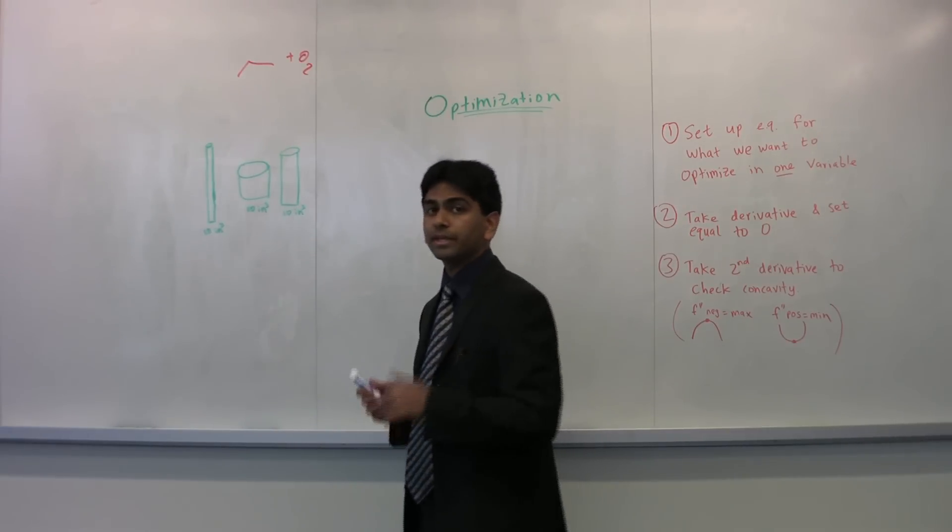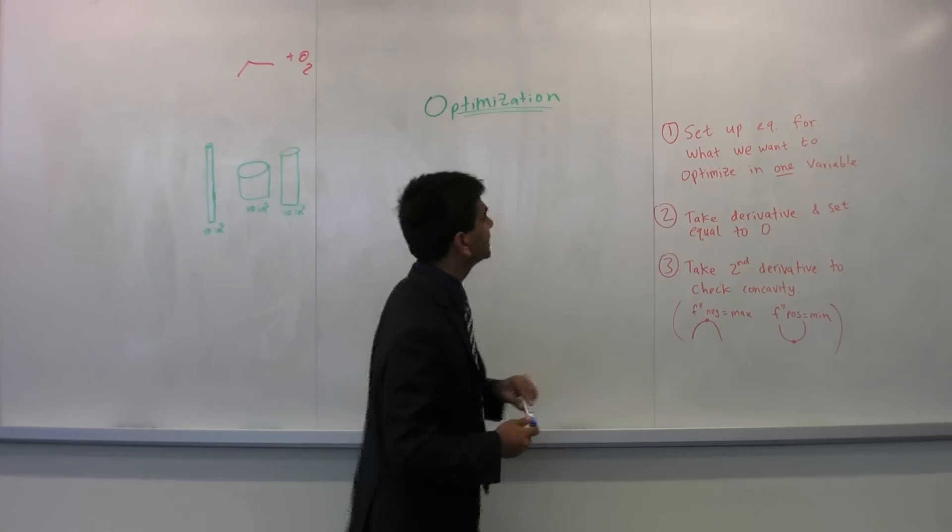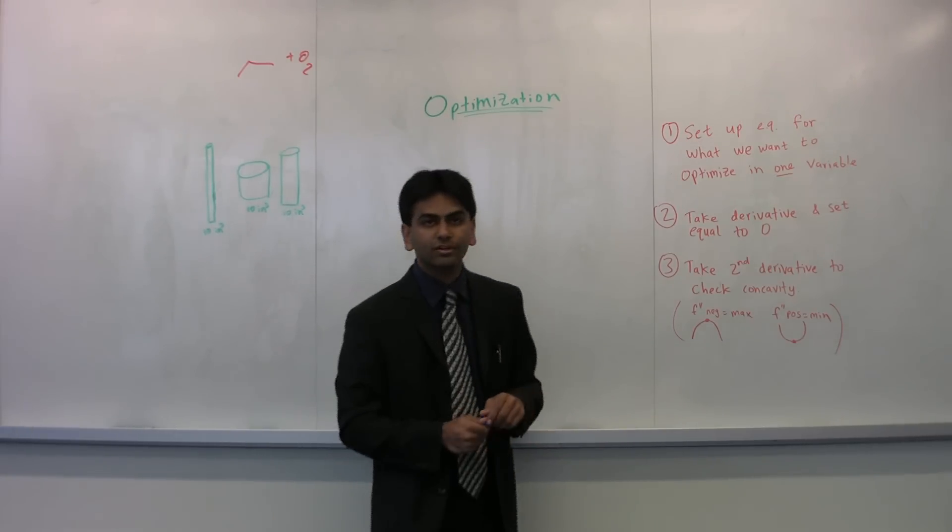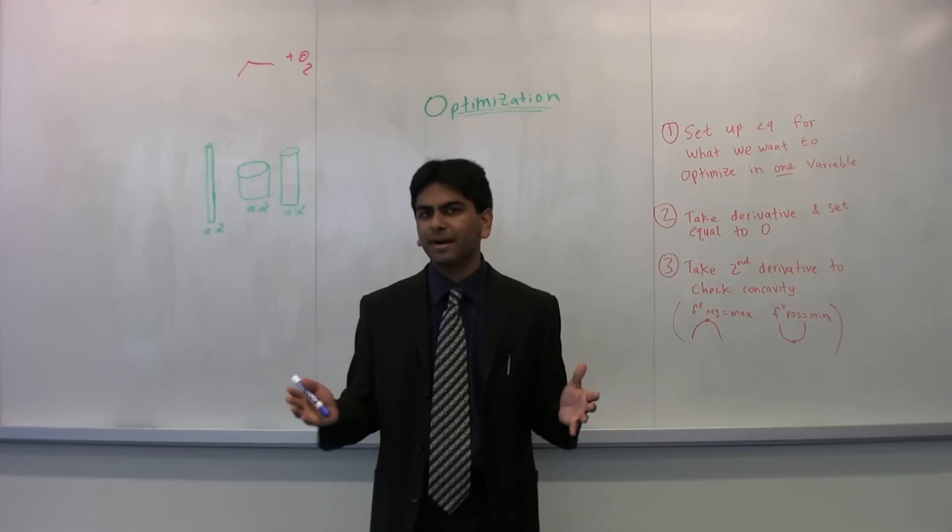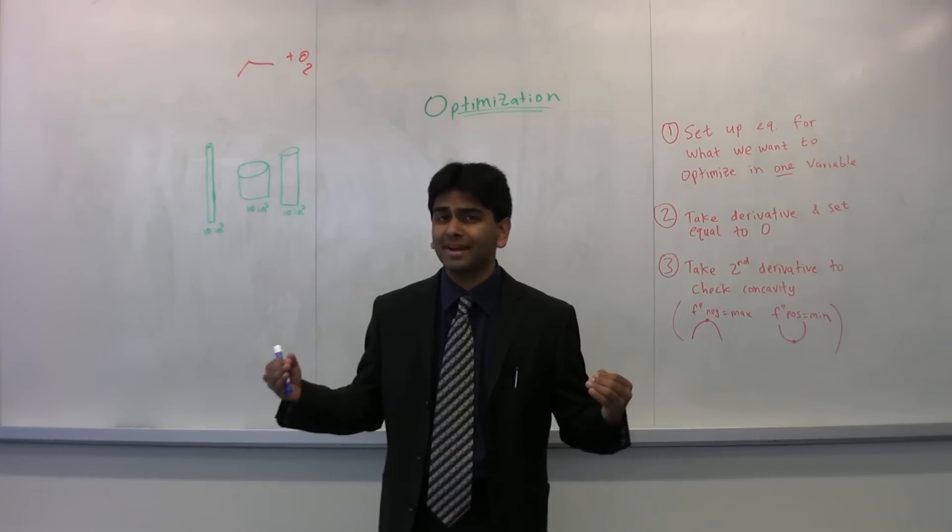So now, here at FFS, we use this three-step technique to figure out optimization questions. Now the first thing you want to do is set up an equation for what you want to optimize. So the first thing you want to ask yourself is, what do you want to optimize? Optimize just means to maximize or minimize anything.